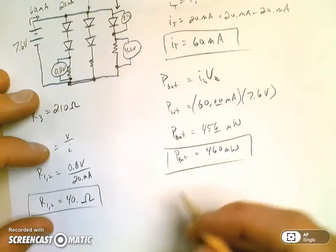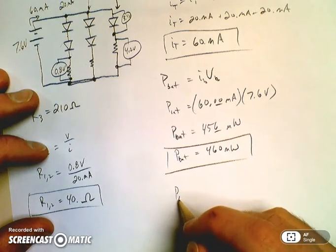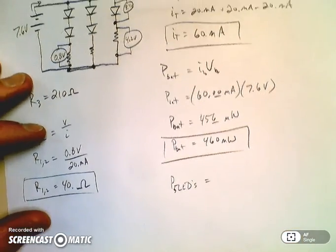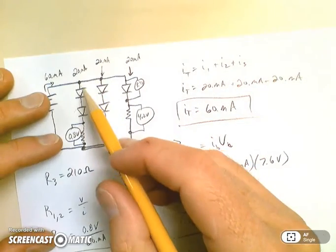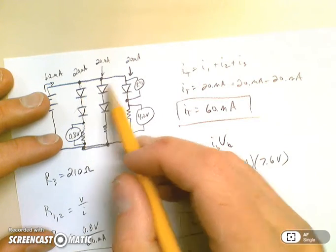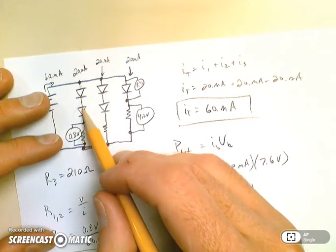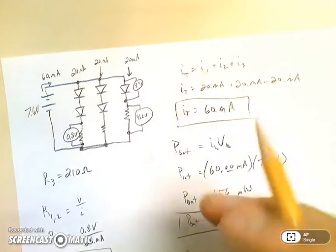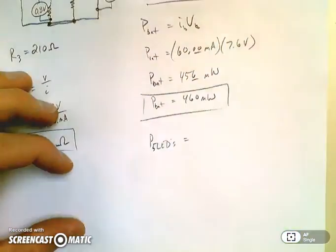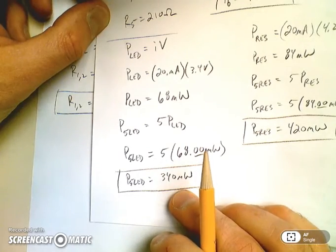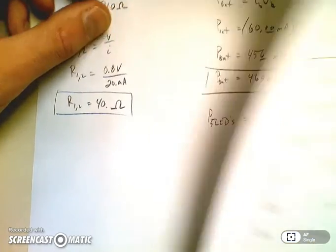Well, here's kind of the cool thing. The power in the five LEDs is actually the same as the last calculation. Because if you think about it, what's the current through this LED? 20 milliamps. What's the voltage? 3.4 volts. And we have one, two, three, four, five of them. The power doesn't change that we want to get out from those LEDs. So if I look back at my last sheet, I could just go through that calculation again. I'm not going to. You can go back in the video, but it's 340 milliwatts.